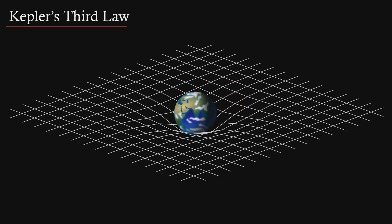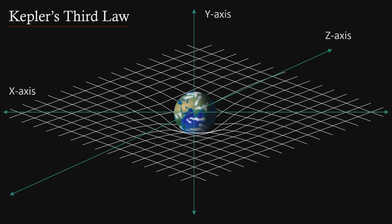Some may argue that planetary orbits are in fact in the volume of a 3-ball and that the elliptical orbit is just a circular orbit being distorted by gravity. In that case, they would argue that we have three spatial dimensions — the x, y, and z axes — and one dimension of gravity. So what's the difference?